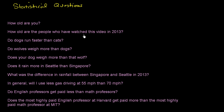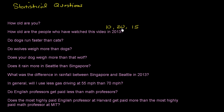How old are the people who have watched this video in 2013? This is interesting — multiple people will have watched this video, and they're not all going to be the same age. There's going to be some variability. One person might be 10, another 20, another 15. What answer do you give? We want to get a sense of, in general, how old are the people. This is where statistics is valuable — we might want to find some type of central tendency, an average or median age. This is absolutely a statistical question.